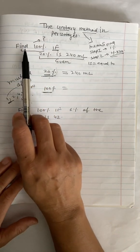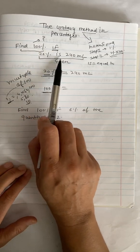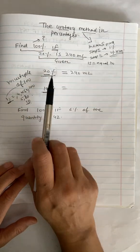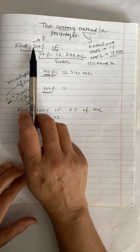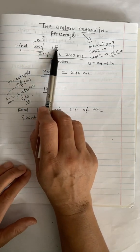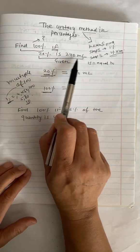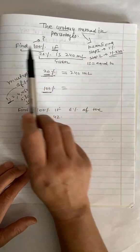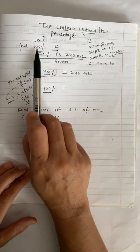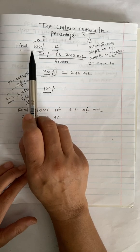In this example, if 20% is 240 ml, then you need to find 100%. First of all, if 20% is 240 ml, which means this information is given, and then you have to find 100%, which is what the question is asking you to do.